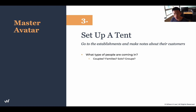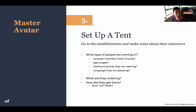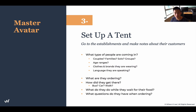Observe what types of people are coming in — whether it's couples, families, solos, or groups — their age ranges, clothes, brands they're wearing, and language they speak. What are they ordering? How did they get there? What are they doing while waiting for their food? What kind of questions do they have when ordering? When people ask 'what kind of ingredients is this?' or 'is this vegan?' or 'do you have vegan options?' — these are all really great insights that you need to write down.